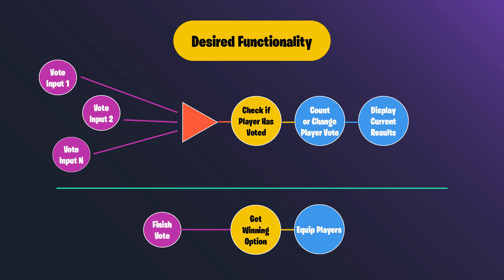Then we check to see if the player has voted, then either add or change the player's vote. Afterwards, we display the current results — that's our voting system. Then we have a finished vote function we can call where we get the winning option and apply the classes to the players.